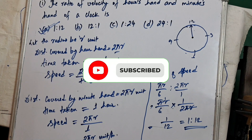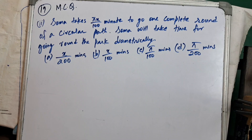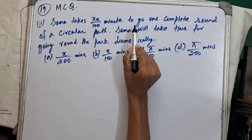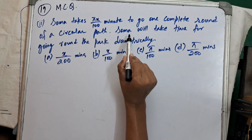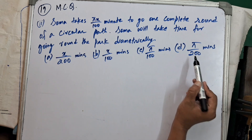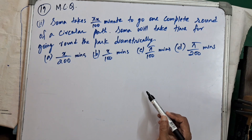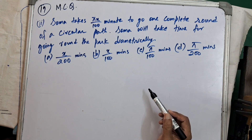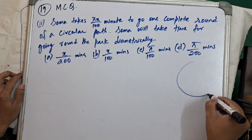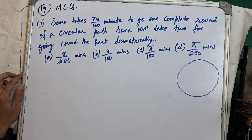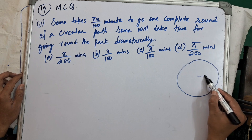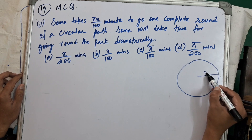Let's move on. Question number 2 of 19: Soma takes πX/100 minutes to go one complete round of a circular path. How much time will Soma take for going across the path diametrically? There are 4 given options. Let's understand this with a diagram — this is the circular path, with center and radius R units, so the diameter is 2R.